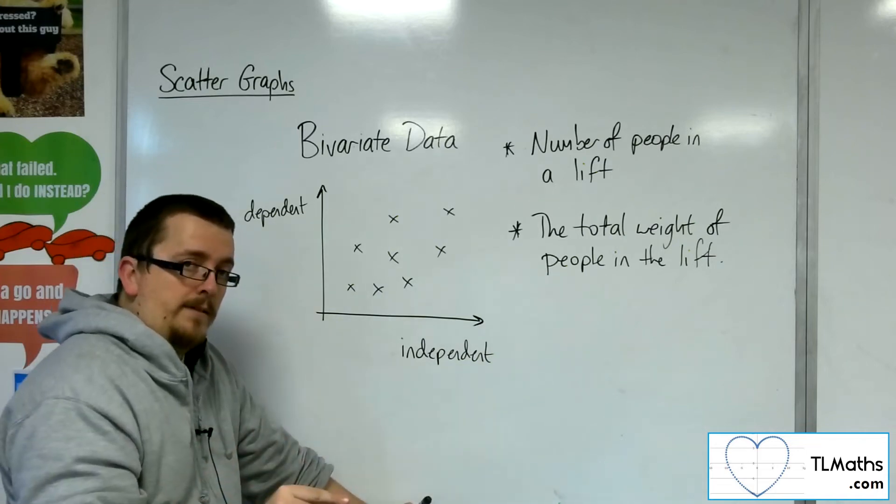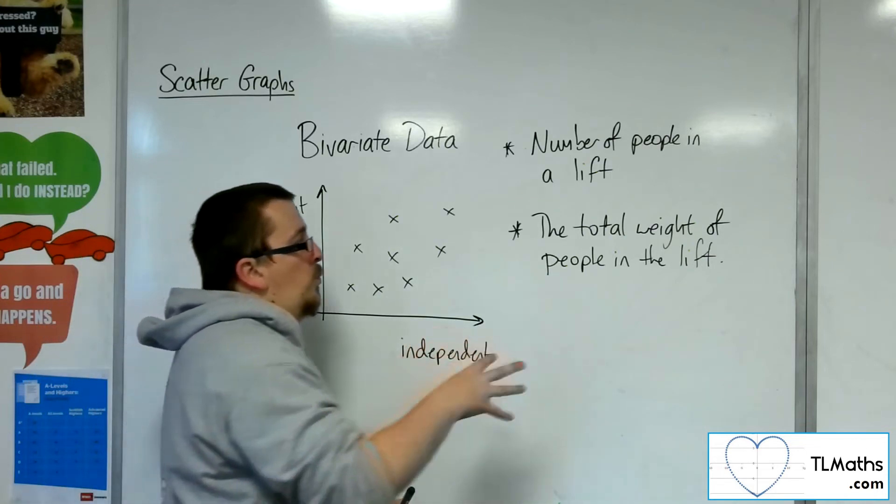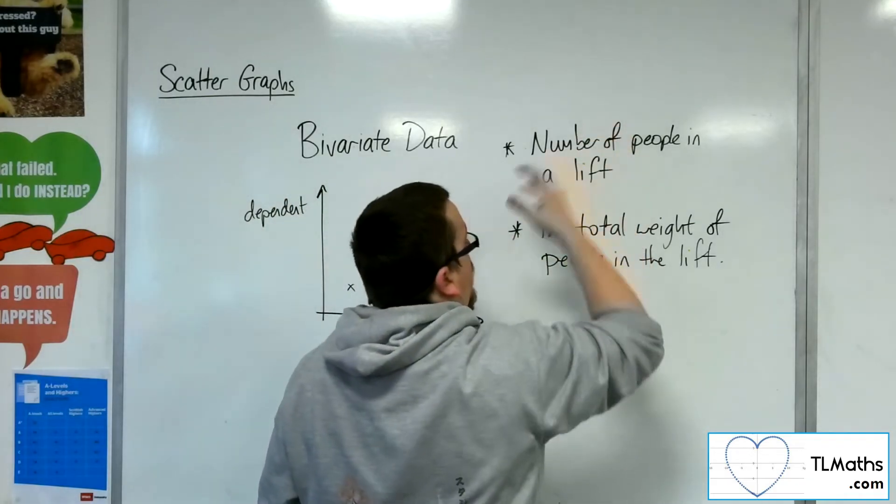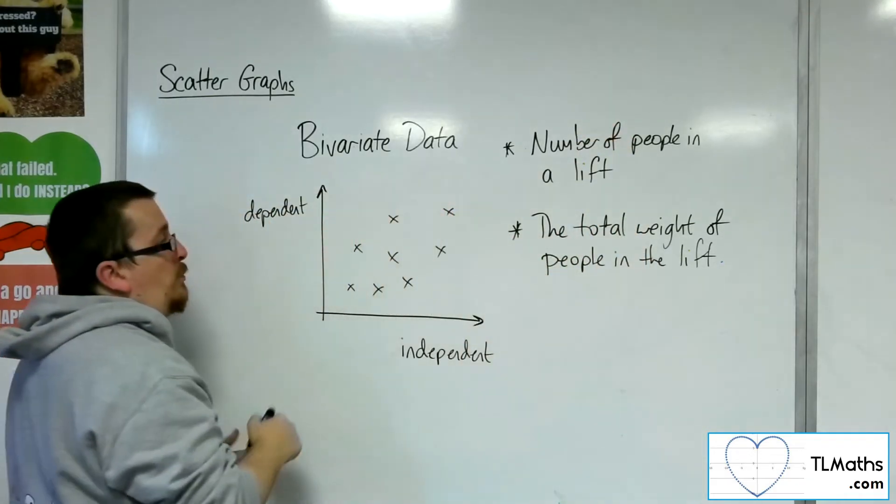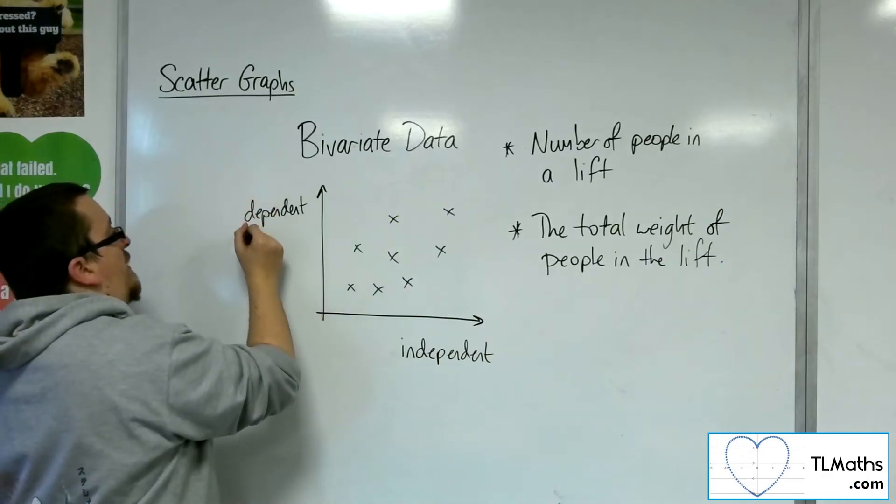So it's the latter. OK, the total weight will depend on the number of people in the lift. So the total weight is the dependent variable.